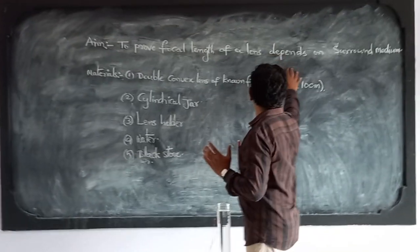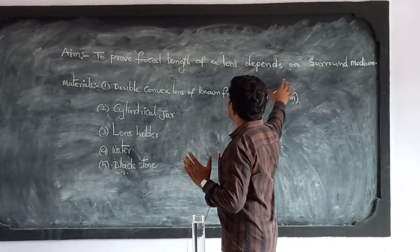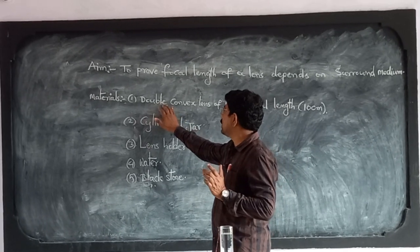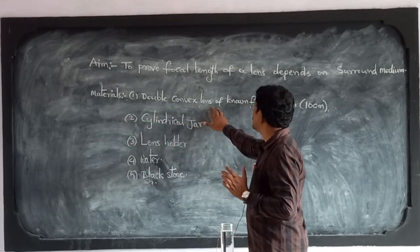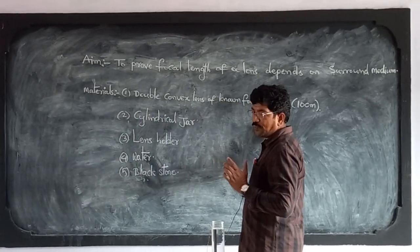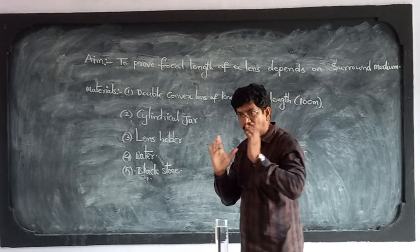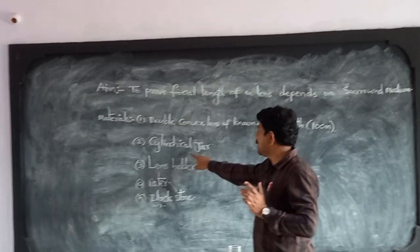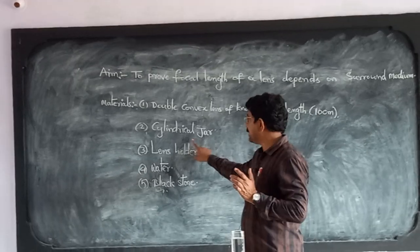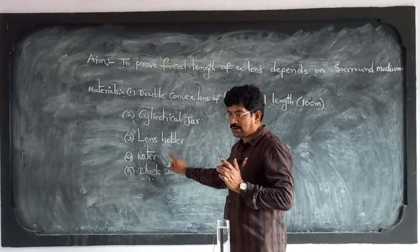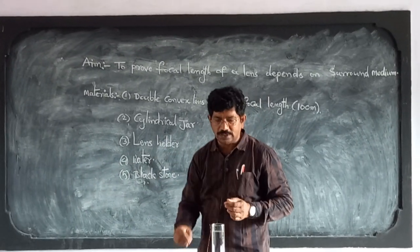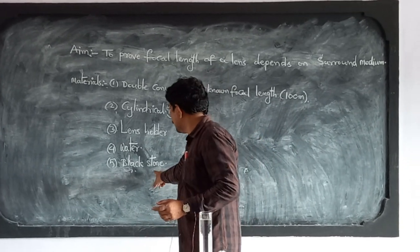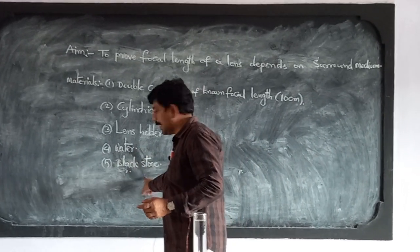The focal length of a lens depends on the surrounding medium. The materials needed are: a double convex lens of known focal length, whose focal length we already found to be 10 centimeters, a cylindrical jar, a circular lens holder, water, and a black stone.